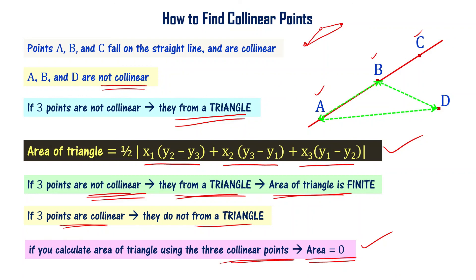Understood? That's the idea. Based on this, in coordinate geometry, whenever three points are given and we need to check if they are collinear or not, we have two approaches: one is using the formula for area of a triangle, and another is using the formula for distance between two points.